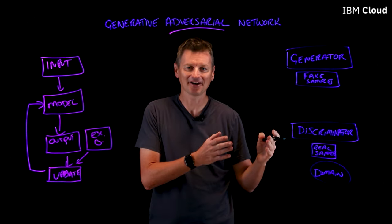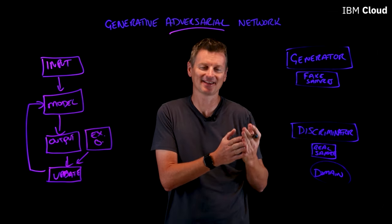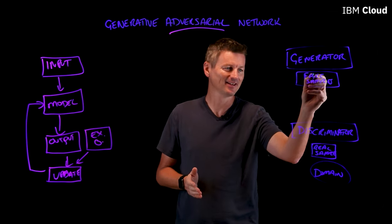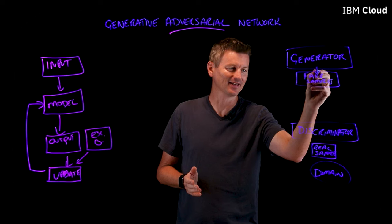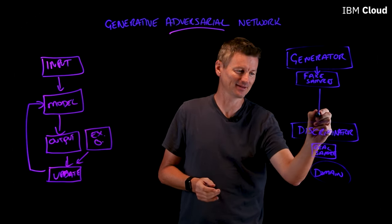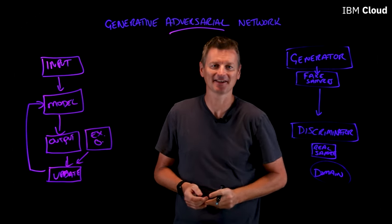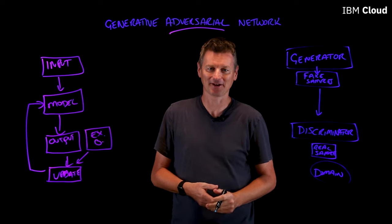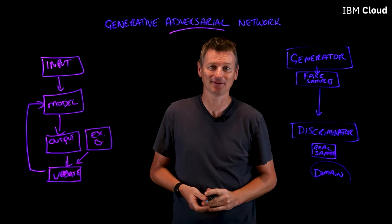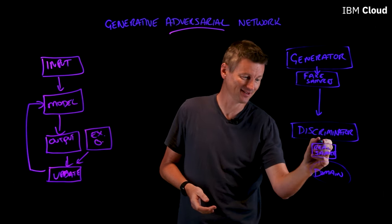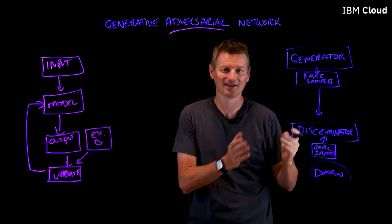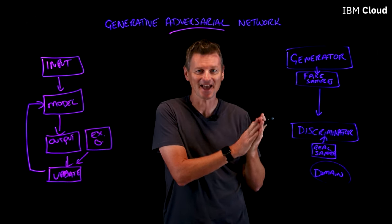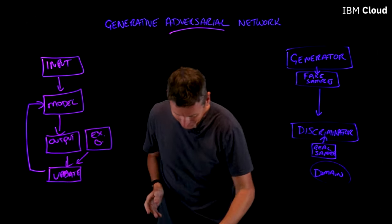Therein lies the adversarial nature of this. We have a Generator creating fake samples and sending them to a Discriminator. The Discriminator is taking a look at a given sample and figuring out: is this a fake sample from the Generator, or is this a real sample from the domain set?